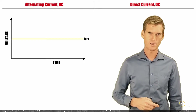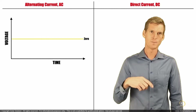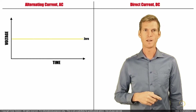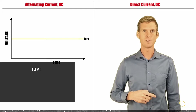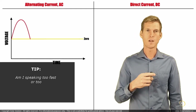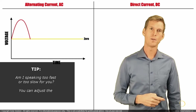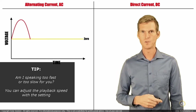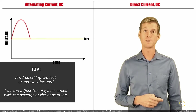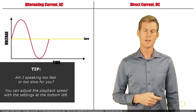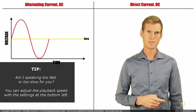Since AC is called alternating current, you can probably expect that the current alternates — something changes over time. It starts at the zero line, then the voltage increases, becomes positive, goes up to a peak point, then drops towards the zero line, goes through it, and the voltage actually becomes negative for a while, following exactly the same shape as the start of the cycle.